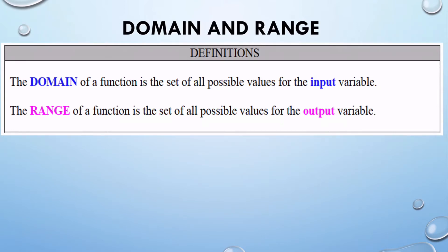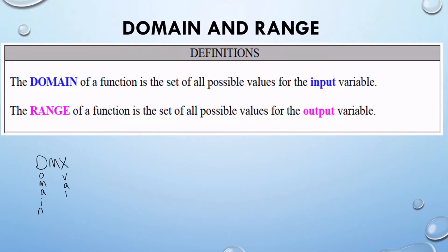So let's just review exactly what domain and range means. The domain of a function is the set of all possible values for the input variable. If you're having trouble remembering whether domain is related to x or y, I like to remember DMX — the famous rapper — and the domain is related to all possible values of x.